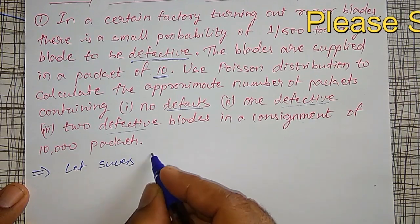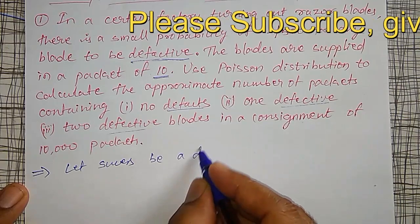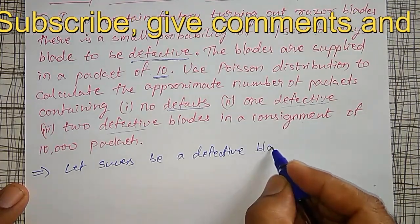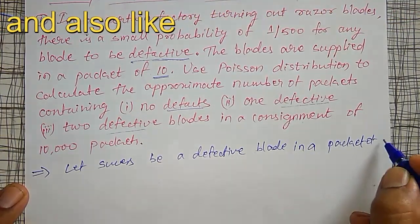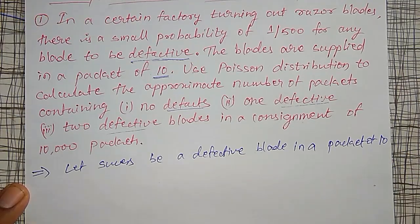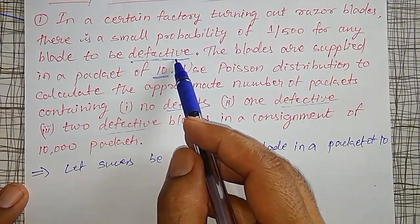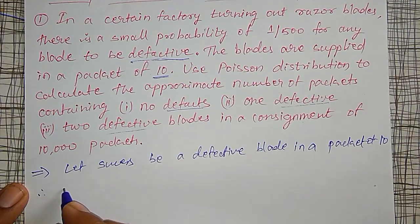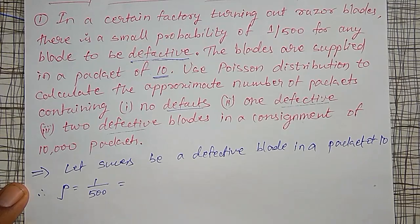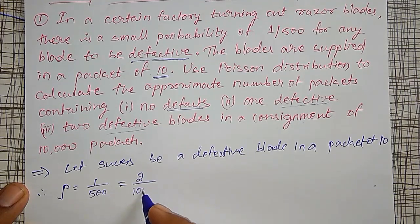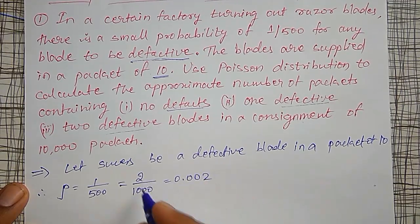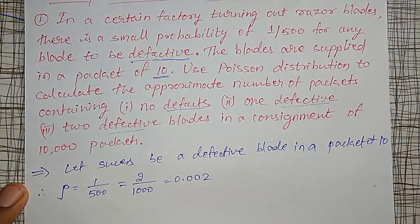Let success be defined as a defective blade in a packet of 10. The probability of success p is given as 1 divided by 500. I can rewrite this as 2 divided by 1000, which equals 0.002. Since p is very small, that is why we are using Poisson distribution.